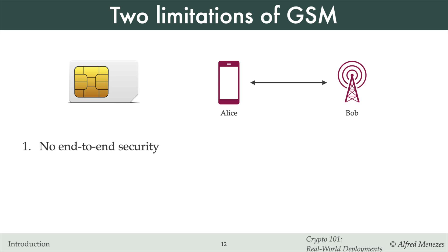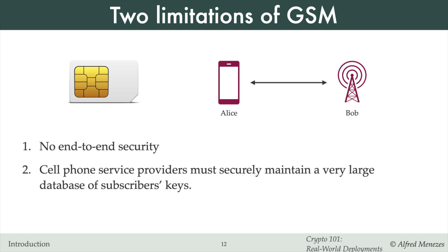However, a key limitation of the GSM security model is that it lacks end-to-end security, meaning service providers can access all voice communications, and potentially even eavesdroppers if data transmitted between cell phone towers is not encrypted. It's usually impractical to achieve end-to-end security in large-scale applications without the use of public key cryptography. Another disadvantage is that cell phone service providers must securely maintain large databases of secret keys — one per subscriber — and if this database is ever compromised, all security is lost.